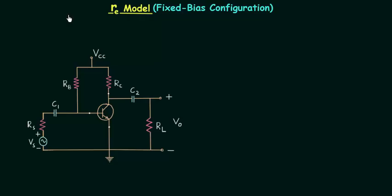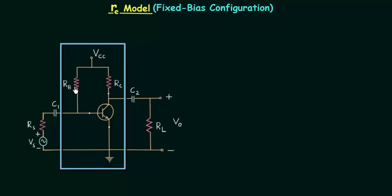In this lecture we will find out input and output impedances of the common emitter fixed bias configuration. This is the BJT amplifier circuit and you can see the fixed bias configuration inside the rectangle.